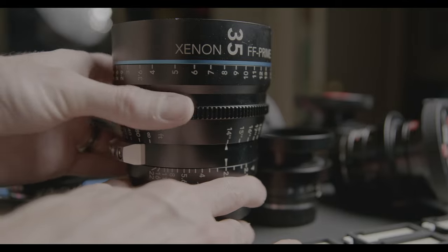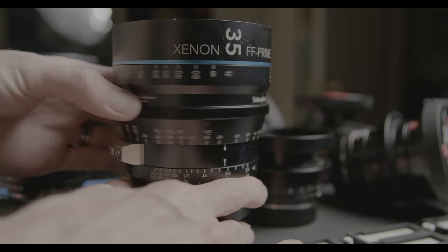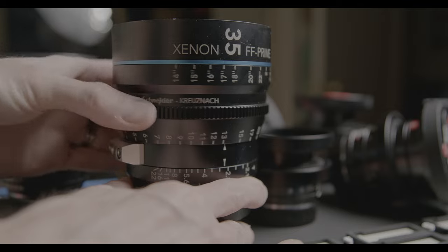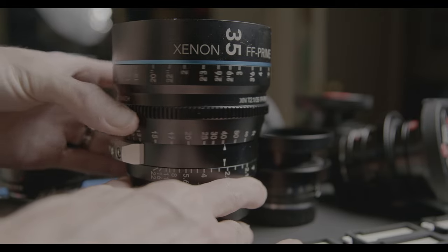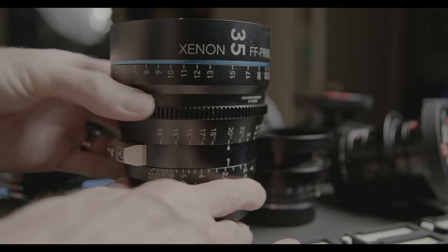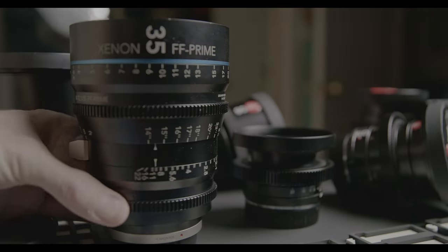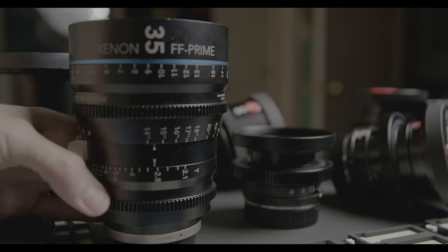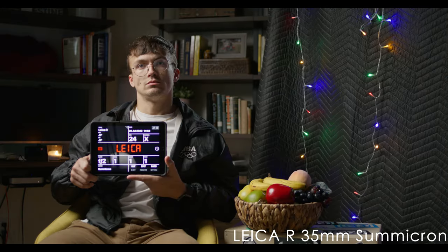Meanwhile, our Xenon has a beautiful huge 300 degree focus throw with professional witness marks on both sides, and notice it definitely has constant volume. There is zero lens travel happening here. As well as a beautiful de-clicked aperture of T2.1, and on with the test.